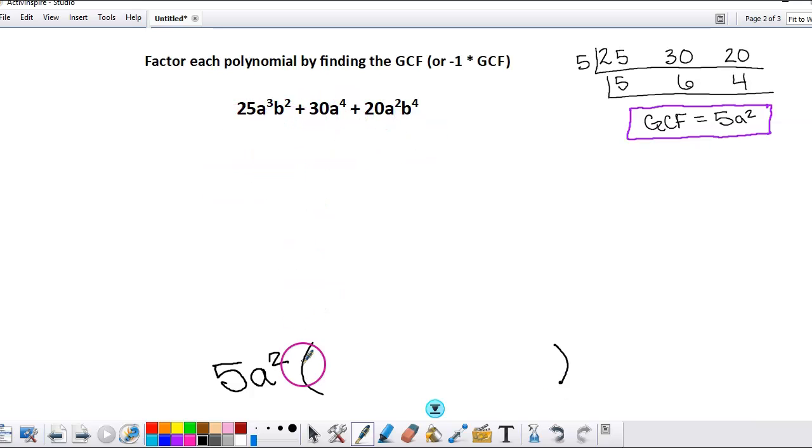So let's do that now. We will take each term: 25a³b² plus 30a⁴ plus 20a²b⁴. And as I was saying before, we divide out the GCF from each term.